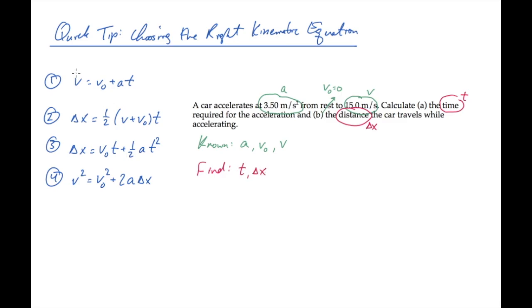Let's go through our kinematic equations and identify each of these. In equation one, we know the final velocity, the initial velocity, the acceleration, and we're trying to find the time. In equation two, we need to find the displacement, that's the distance the car travels. We know the final velocity, the initial velocity, but don't know the time.